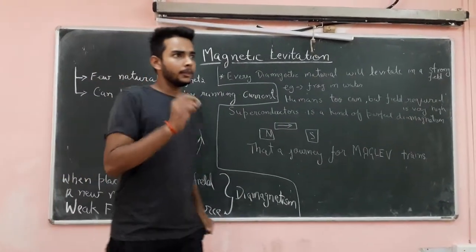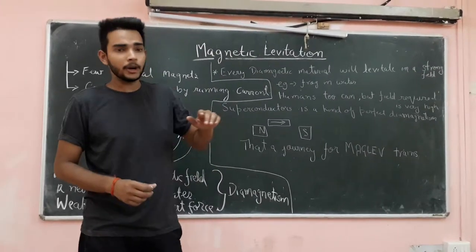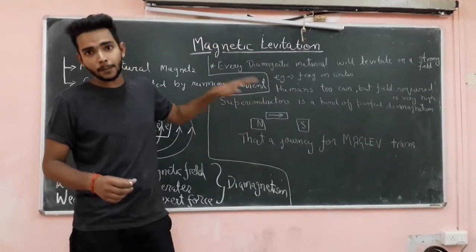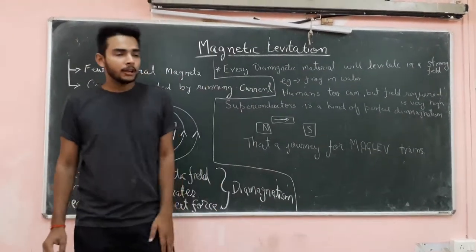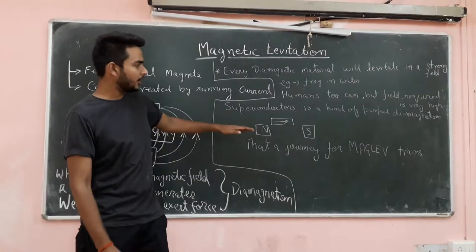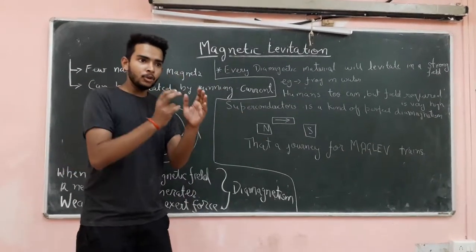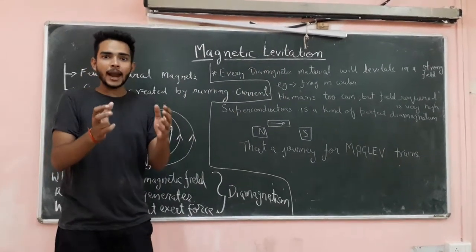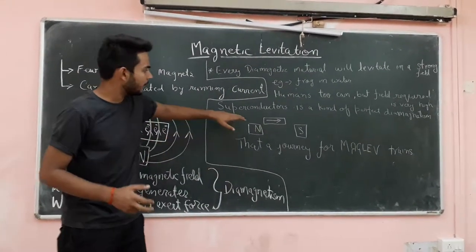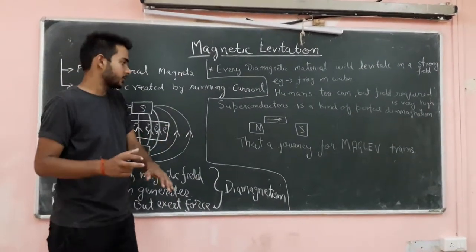So, the best thing which levitates nicely is superconductors. Superconductors is a perfect example of diamagnetism. Like, if a superconductor is placed in a field, in the North Pole and South Pole, it will move from one place to another. It has that much force that it dribbles from North Pole and reaches up to South Pole. It is a perfect example for diamagnetism.